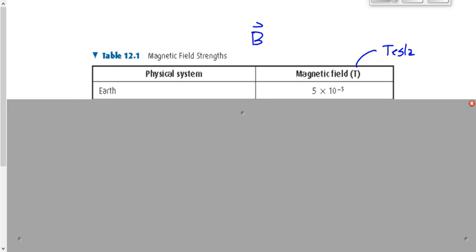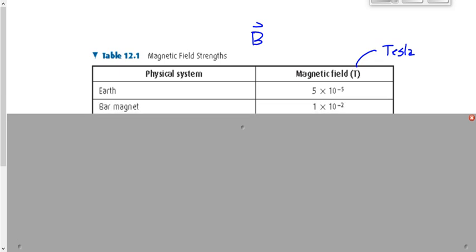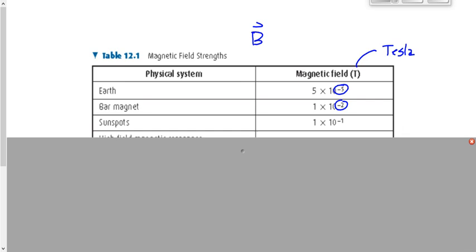You know the Earth's field is weak because of the compass activity on Thursday — when you brought the compass near the bar magnet, the Earth's magnetic field didn't matter anymore. The bar magnet is about 10⁻² Tesla, which is about a thousand times the strength of the Earth's magnetic field. That's why the compass was affected by the bar magnet far more than by the Earth.